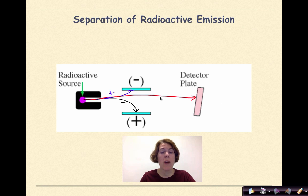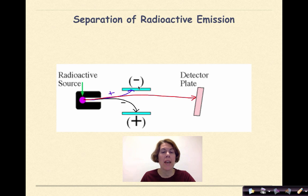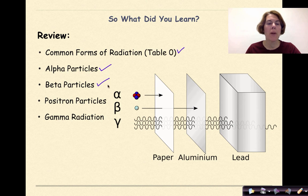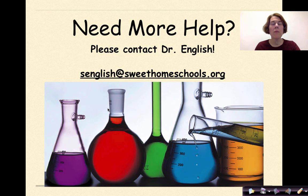That's a quick overview of how to classify radiation by whether it's attracted to a positive plate, a negative plate, or neither. We talked about common forms of radiation from table O: alpha particles, beta particles, positron particles, and gamma radiation. Need more help? Feel free to contact me. Have a great day.